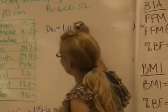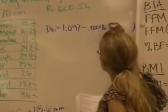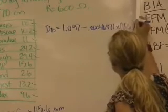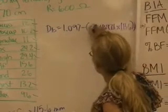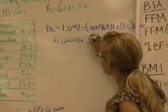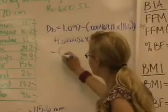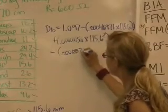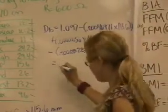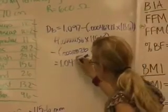So we're going to go 1.097 minus 0.00046971 times 115.6 plus 0.000056 times 115.6 squared, minus times her age, which was 22. And this equals 1.047.